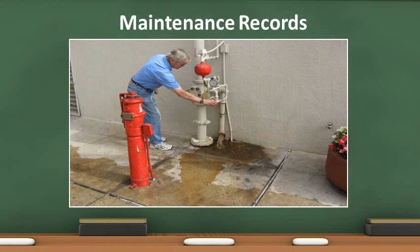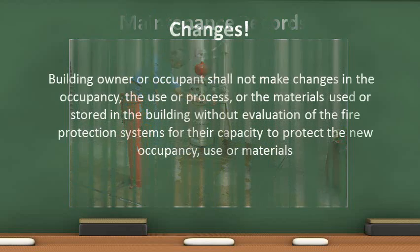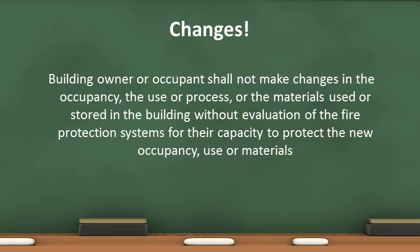Periodic maintenance is required on all components of the sprinkler system. Monthly, quarterly, and annual inspection, testing, and maintenance, as well as 5-year certifications are required on all fire sprinkler systems. Records of testing and maintenance must be kept on site. If the fire, materials stored within the structure, the use of the structure, or processes or materials within the structure change, the fire protection system in the building will need to be re-evaluated and changed as necessary.